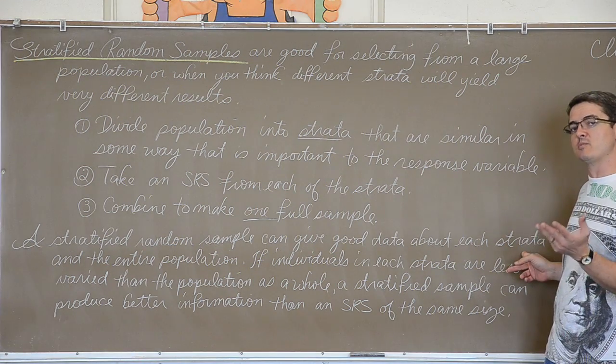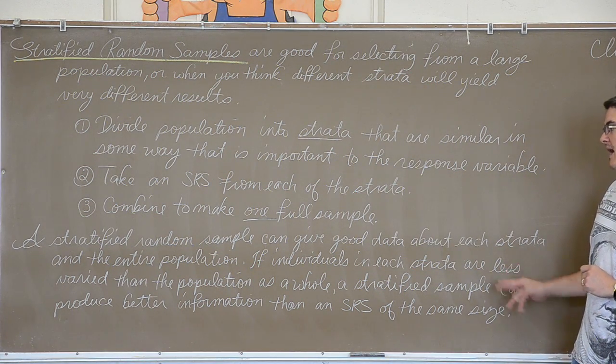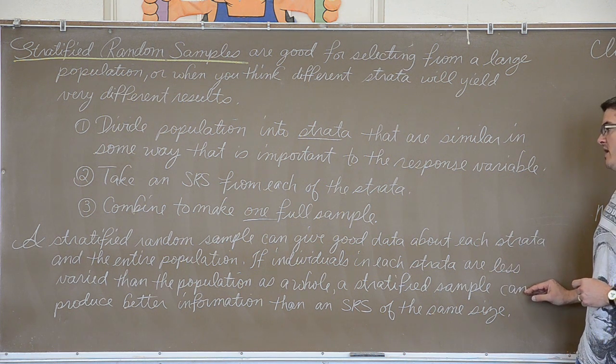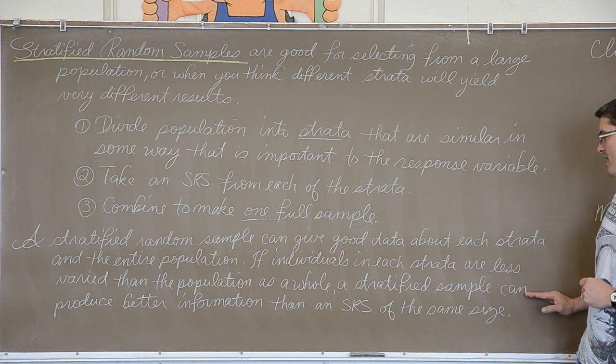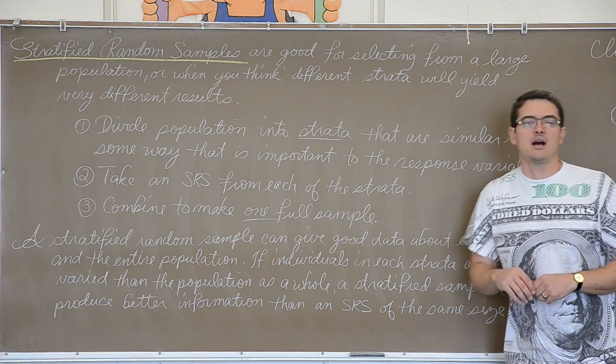A stratified random sample can get good data about each strata, so I can find the opinions how they vary between seniors, juniors, sophomores, and freshmen. If I broke it back up into the strata when I analyze it, and the entire population. If individuals in each strata are less varied than the population as a whole, the stratified sample can give better information than SRS of each size.